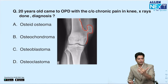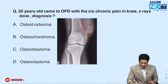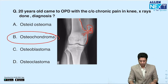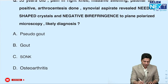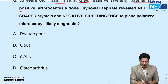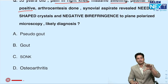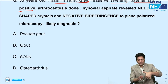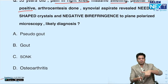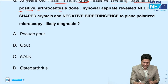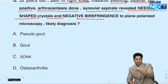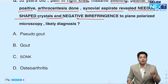Osteochondroma recap: an outpouching tumor from the metaphyseal region of a long bone with the medullary canal in direct continuity with the parent bone — also known as exostosis. For a 33-year-old with right knee pain, massive swelling, and positive patellar tap, arthrocentesis is performed. Synovial aspirate reveals needle-shaped crystals with negative birefringence on plane polarized microscopy.